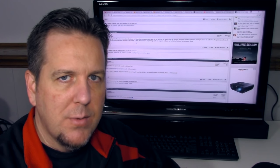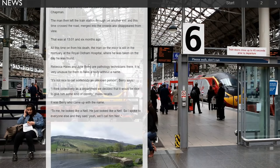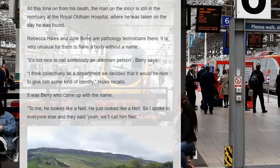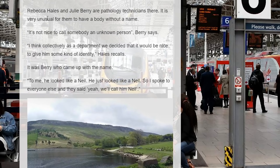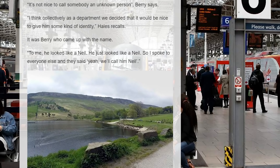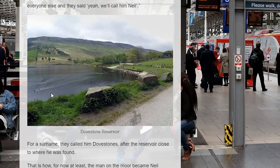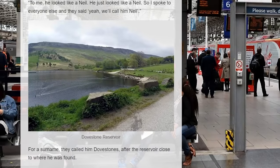So how did he get the name Neil Dovestones? Rebecca Hales and Julie Berry are pathology technicians at the mortuary of Royal Oldham Hospital, and it is very unusual for them to have a body without a name. 'It's not nice to call somebody an unknown person,' Berry says. They decided collectively to give him some kind of identity. Berry came up with the name: 'To me, he looked like a Neil — he just looked like a Neil.' For a surname, they called him Dovestones after the reservoir close to where he was found. That is how the man on the moor became Neil Dovestones.